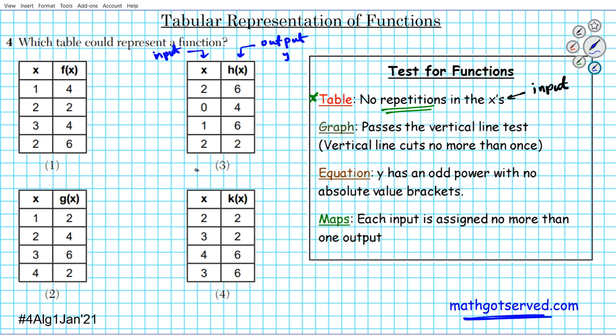Let's take a look at option one. You have two repeated, so that automatically means this is not a function. Option two - oh, there you go, another two is repeated here. Actually, that's option three. This is not a function.